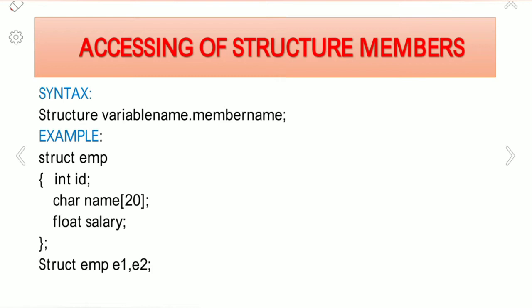The syntax for accessing structure members is: structure_variable_name dot member_name. The structure members individually have no meaning on their own. For example, just an employee ID alone doesn't tell you which employee's ID it is — that is not meaningful.